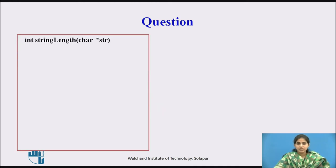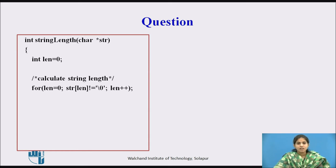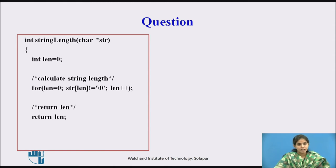Here the return type of the function is integer. The name of the function is string_length and we pass a character pointer array str. We take one variable length initialized to 0. We use a for loop iterating each individual character: while str[length] is not equal to null, the loop executes and length is incremented. Finally we use a return statement to return the length to the calling function.